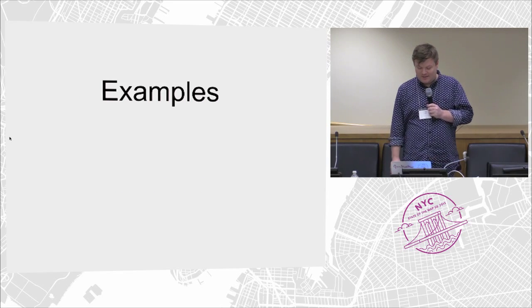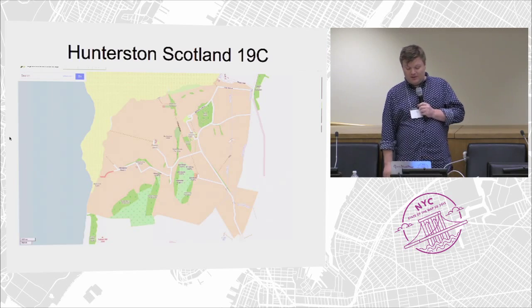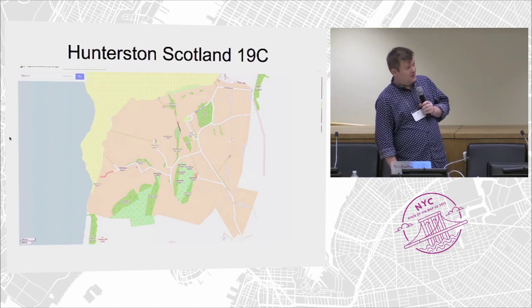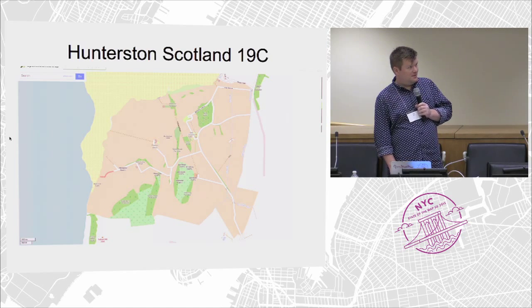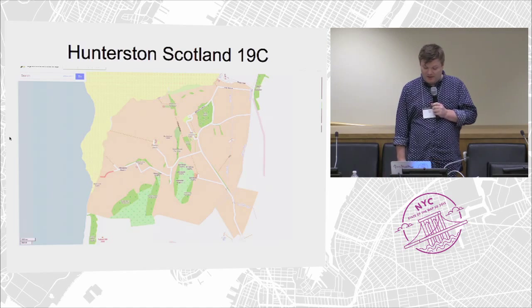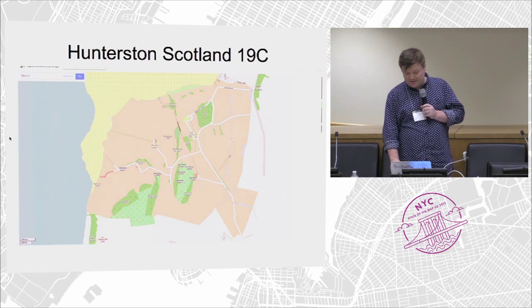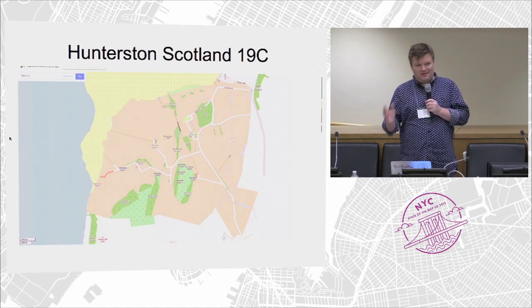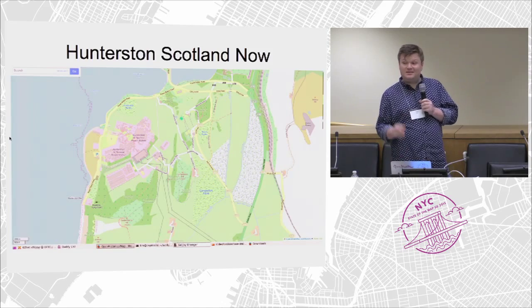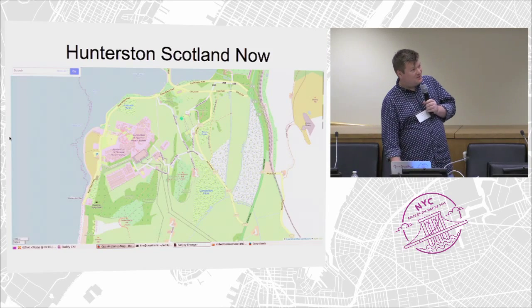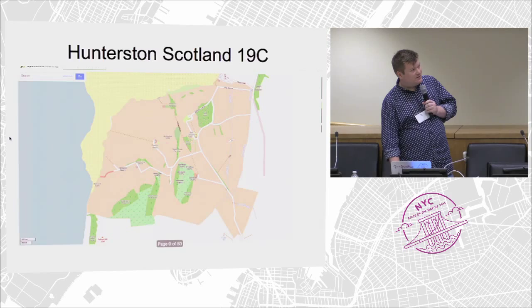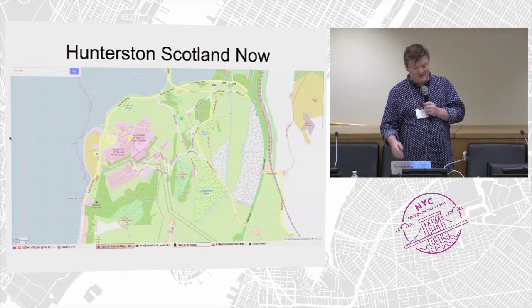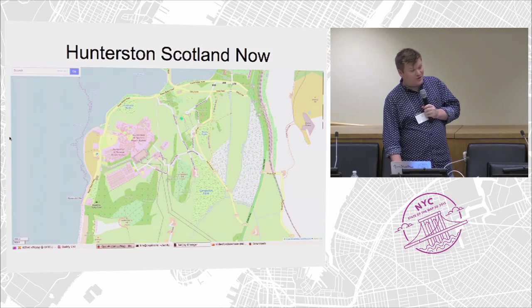Some examples: in Scotland, this is Hunterston on the west coast. A mapper has mapped this town of Hunterston as it was in the 19th century in Open Historical Map — a representation quite different from OSM. Comparing the two, the main difference you can see is that today there's a nuclear power reactor, which says quite a lot about change over time.